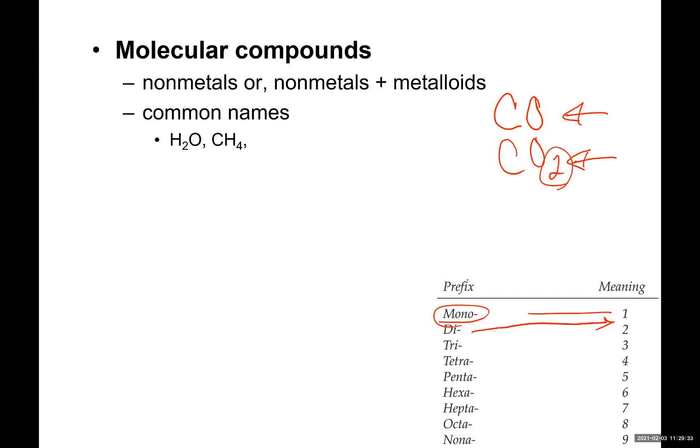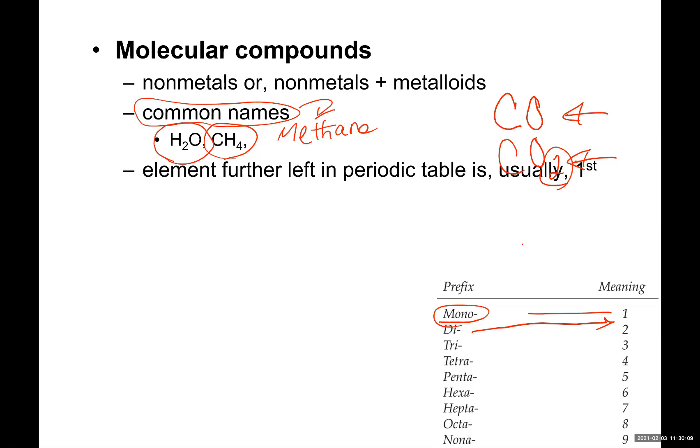Now, we do not call water dihydrogen monoxide. Why? It's an old compound. We know it for a long time. We know its property. So older compounds have common names. This is water, not dihydrogen monoxide. And this is not carbon tetrahydride. It's called natural gas, methane. So sometimes you have common names. They are few, they are not many.